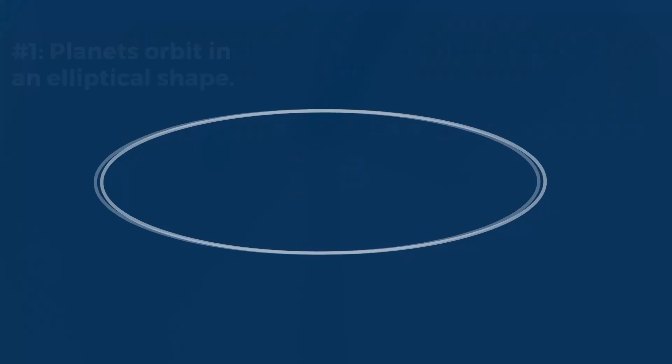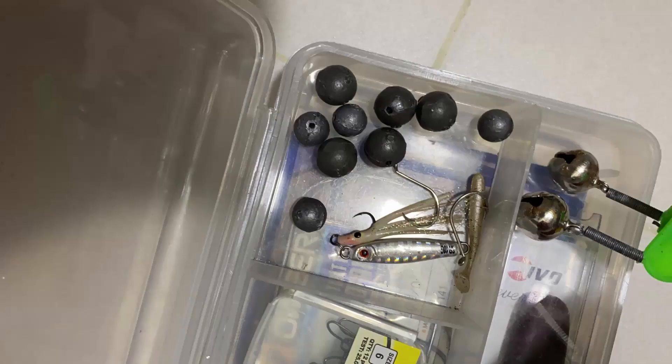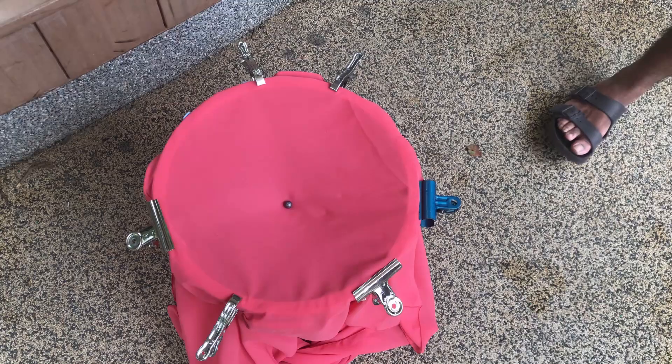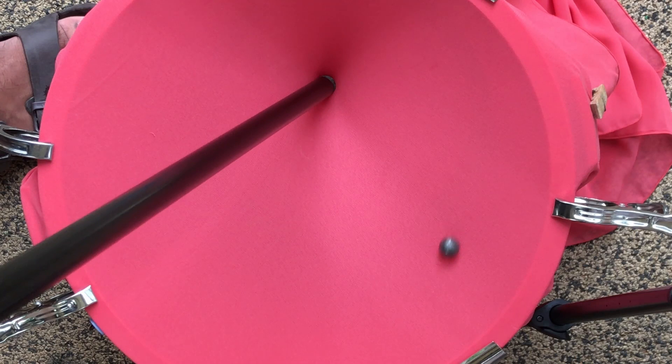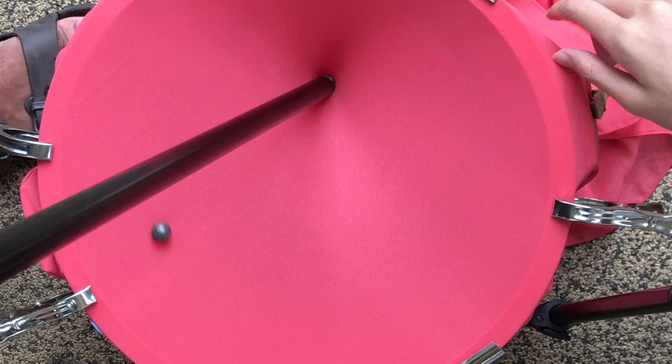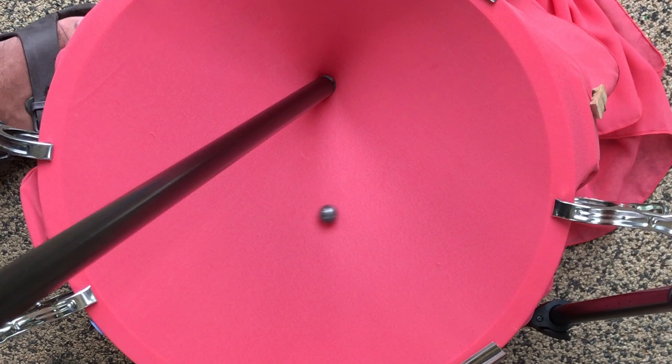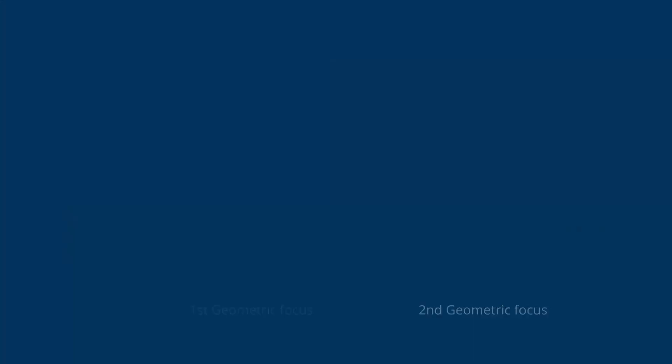Kepler's first law states that the orbit of a planet about the Sun is an ellipse with the Sun at one focus. In this experiment, the metal balls represent planets, while the stick represents the Sun. As you can see, the balls travel in an oval-shaped fashion around the stick. Moreover, the balls tend to travel faster when nearer to the stick, and slower when further away. This shows that indeed the planets orbit in an ellipse about the Sun.